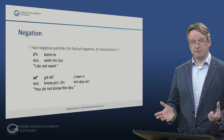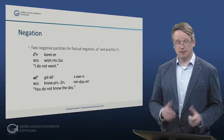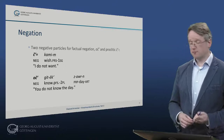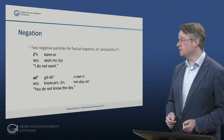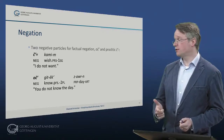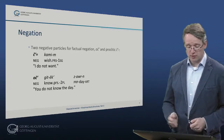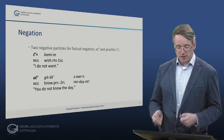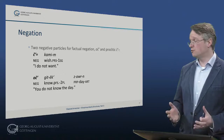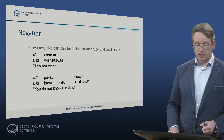There are basically two particles for factual negation: 'voč' and the proclitic 'č.' So 'čikamim' — I do not want — or 'vočkitek zoren' — you do not know the day. These are the two basic forms of factual negation.